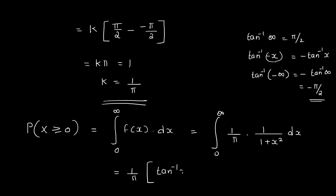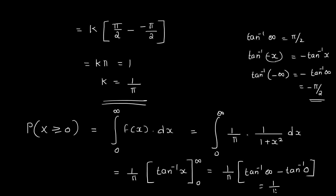That is equal to 1 by pi into tan inverse x evaluated from 0 to infinity. That is 1 by pi into tan inverse of infinity minus tan inverse of 0, which is 1 by pi into pi by 2. Hence the answer is 1 by 2.